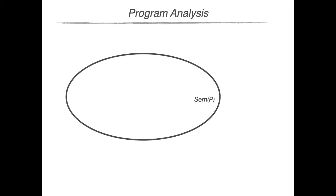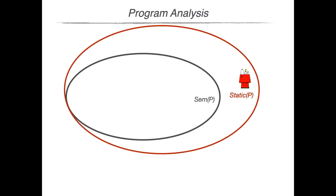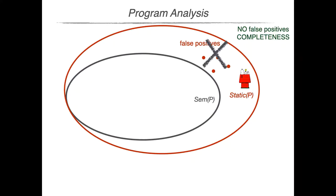Given the semantics of a program that describes the behavior of the program at runtime, static analysis provides an over-approximation of program behavior, wherein precision is given by false positives — behaviors that the static analysis sees as possible while they're not. Static analysis is precise when there are no false positives, and in this case we say that the analysis is complete.